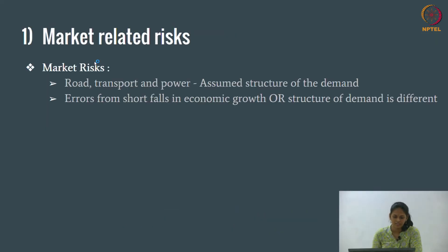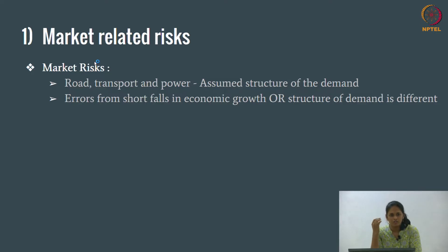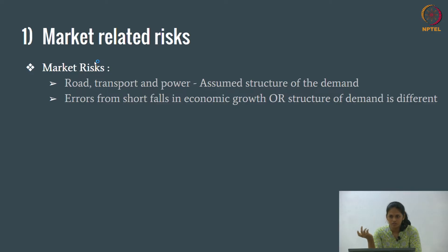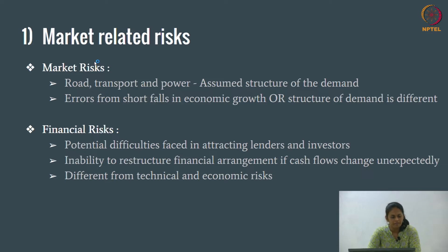Market-related risks: the first part is market risks. This usually happens in power projects or transportation projects. We assume that demand is going to be a certain value but might not be able to achieve it — because of wrong predictions or changes in economic growth. There are also financial risks, which are the difficulties faced when trying to get lenders and investors. These are different from technical and economic risks.